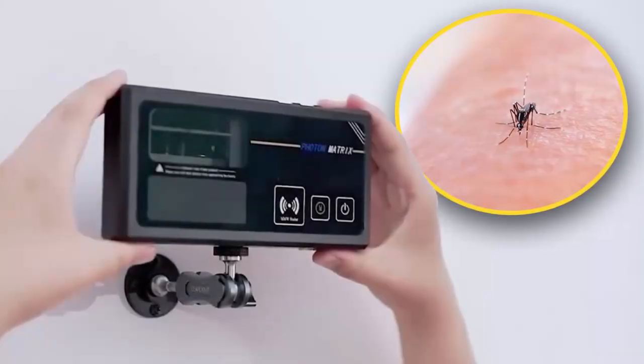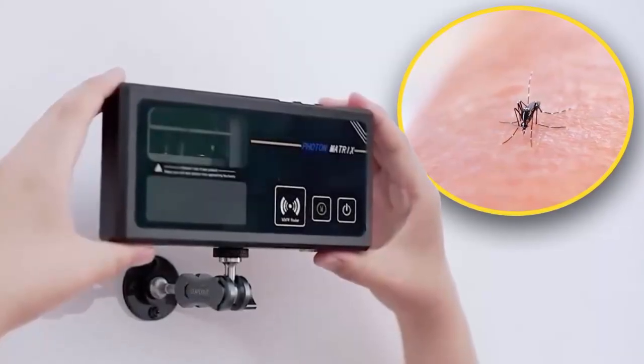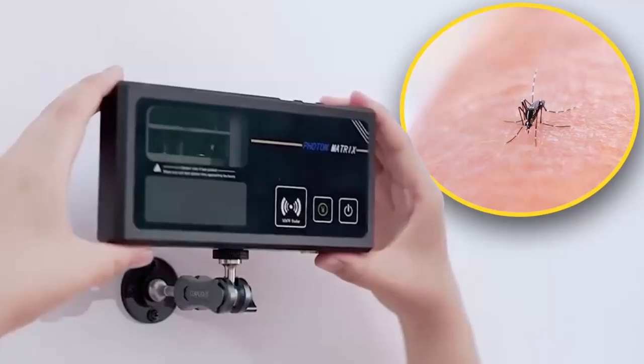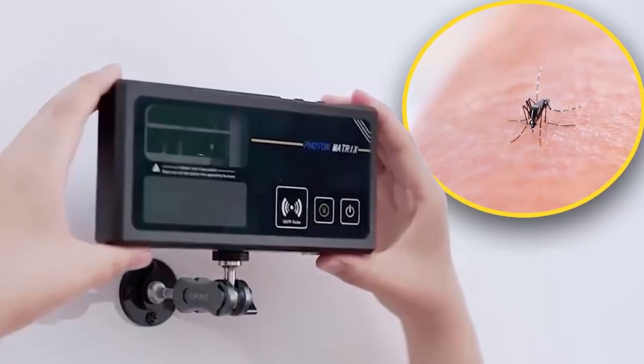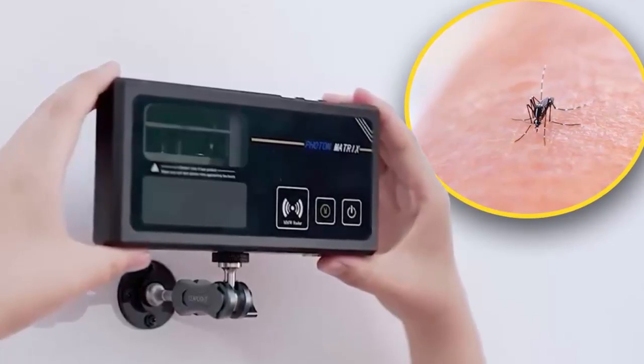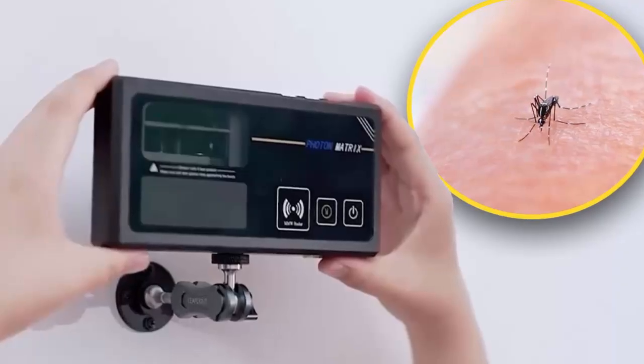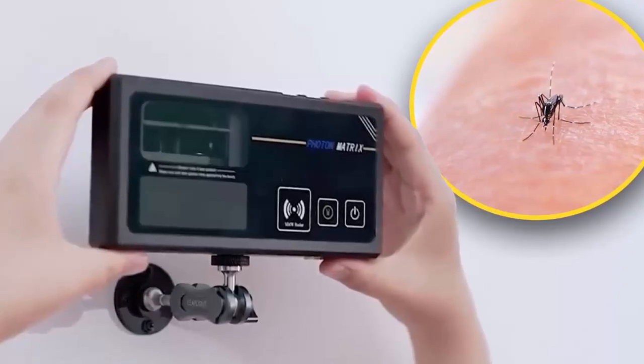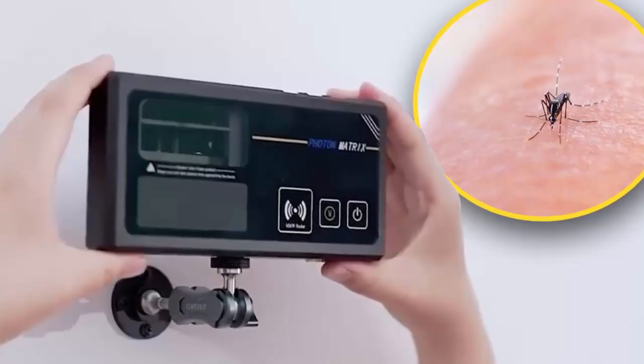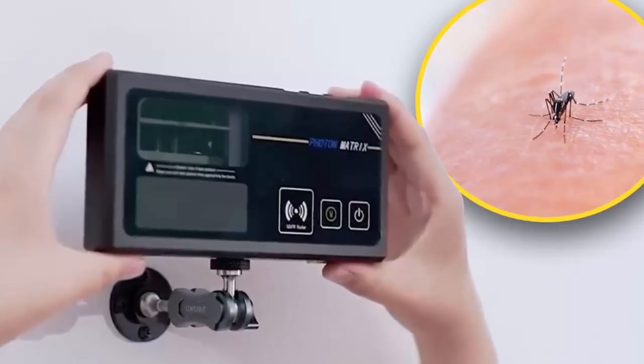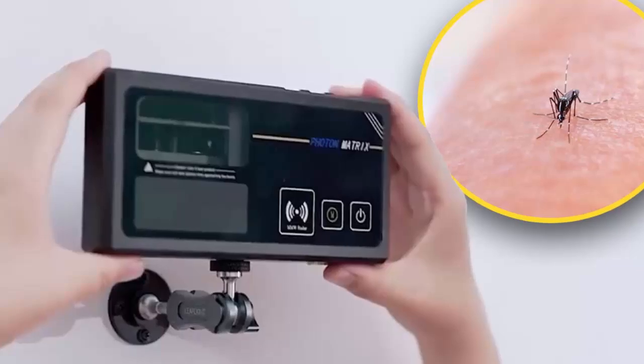What if the deadliest animal on Earth could be stopped mid-flight by a beam of light? For decades we've fought mosquitoes with sprays, coils, and toxic chemicals, but a team in China thinks they've built something better—something out of science fiction.